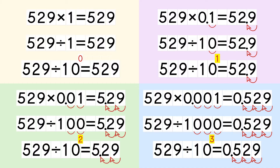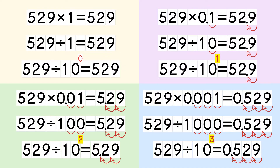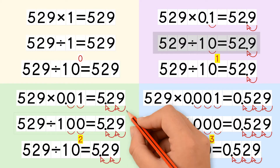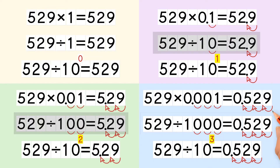As you can see, we have a pattern. When we divide a number by 10, 100, or 1000, we can use the number of zeros in the divisor to tell us how many places to the left we move the decimal point. When we divide a number by a power of 10, we can use the exponent to tell us how many places to the left we move the decimal point.